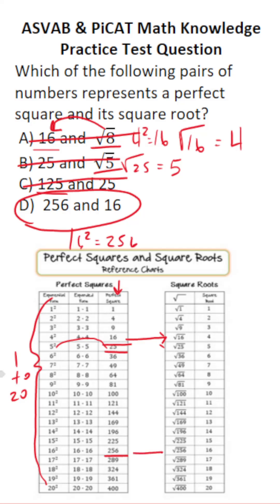And what is the corresponding square root of 256? The square root of 256, as you can see from this chart, and as you should commit to memory, is 16. So D is the correct answer.